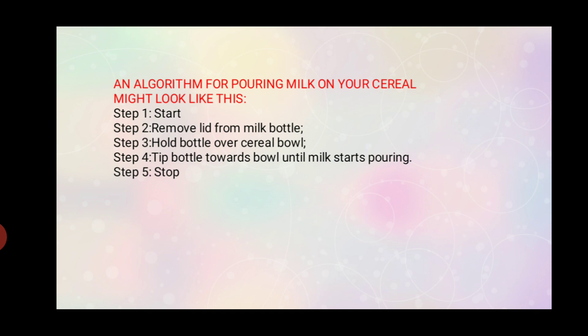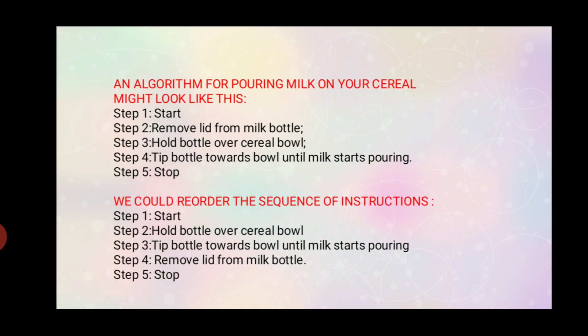Here is an example for pouring milk on your cereal. Step 1: Start. The first step in any algorithm will be Start. Step 2: Remove lid from milk bottle and hold bottle over cereal bowl. Step 3: Tip bottle towards bowl until milk starts pouring. And then Stop. This is the right order to pour milk on your cereal.